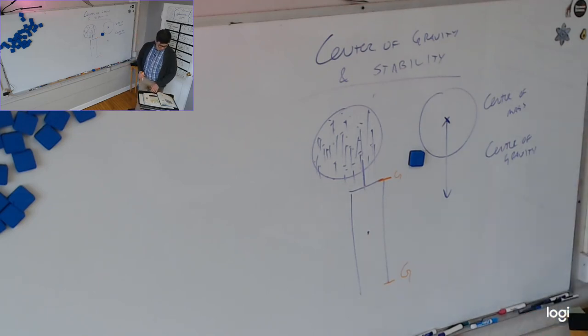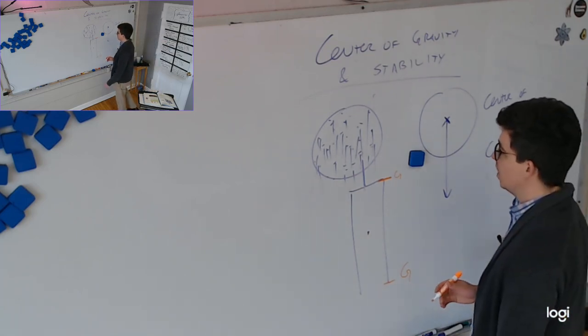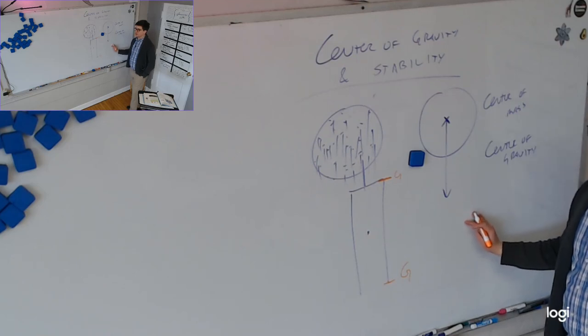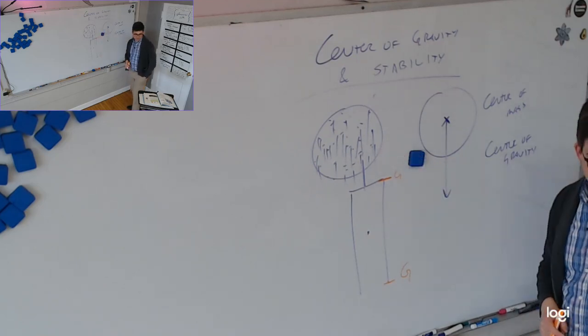So all center of gravity is, is where we can consider all the force to be acting on the object. And this makes it a lot easier when we're talking about mass objects, that we don't have to worry about the individual pieces that make them up.